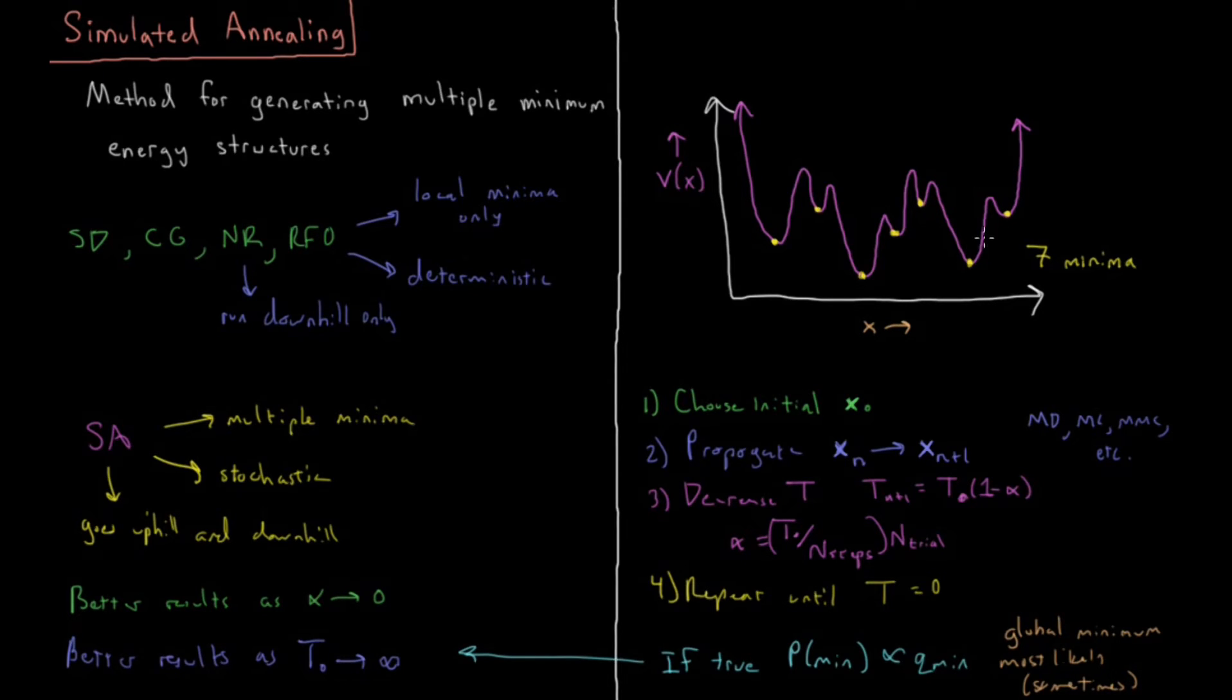There's lots of situations it isn't, but basically simulated annealing, you're much more likely to end up with the global minimum than either of these results here, steepest descent, conjugate gradient, et cetera.